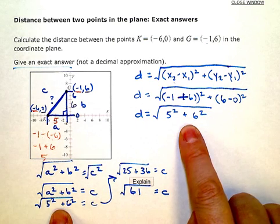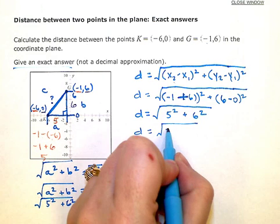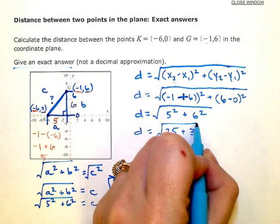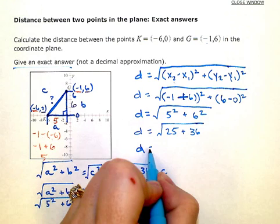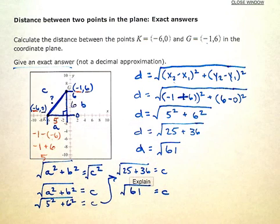So if we just finish it out, 5 squared is 25, 6 squared is 36. And 25 plus 36 is 61. And since they want an exact answer, not a decimal approximation, we're just going to leave it here. And 61 is prime, can't be factored. There's nothing that goes into it, so we can't simplify that radical. We just leave it like that, and that's our answer.